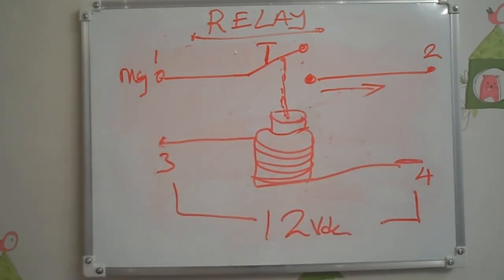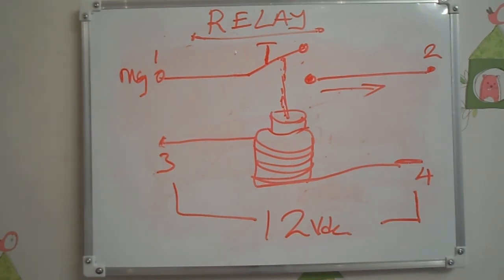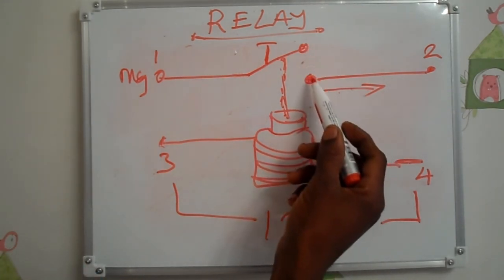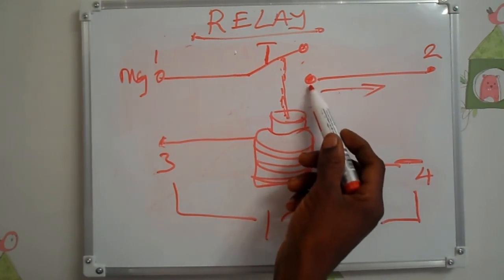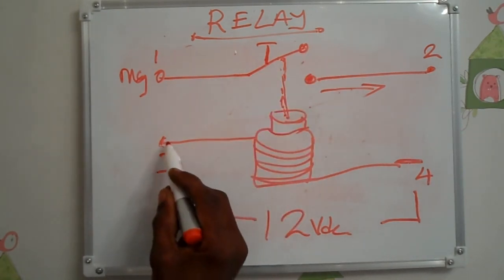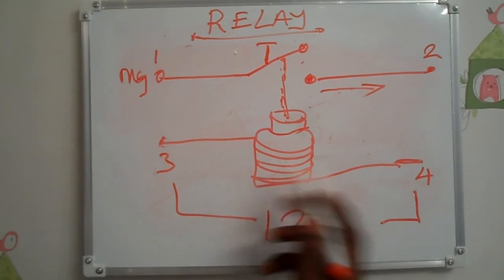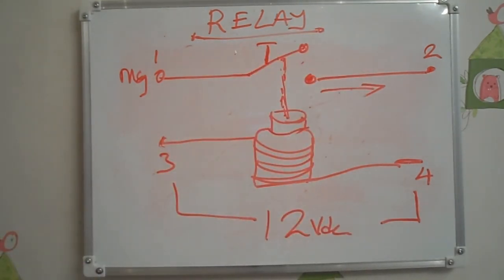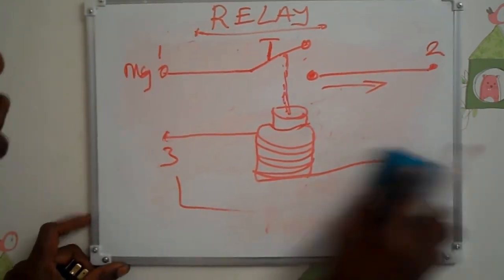In a 4-pin relay, two pins are for the contact and two pins are for the coil. In any type of relay, two pins are majorly for the coil while the others are for the contact. In other relays you will see both normally open and normally closed contacts, but in this 4-pin relay we have only normally open — there is no normally closed. It is normally open because before you apply any voltage to the coil, the contact has been open.